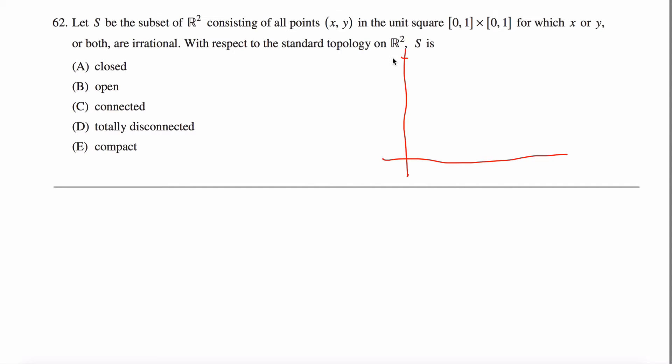So let's draw a picture. Here's my unit square, there's one, there's one, talking about all the stuff in here including the border. S is the subset of that such that either the x coordinate or the y coordinate or both are irrational.